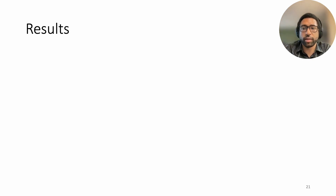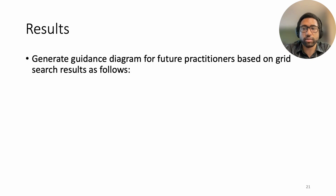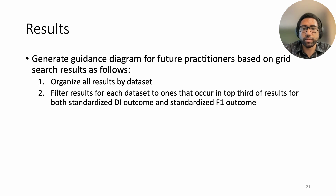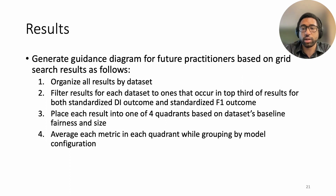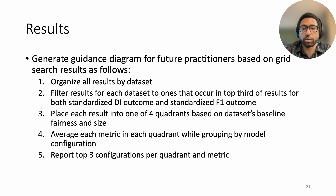In light of the trade-offs evidenced by our results, another research objective was to distill best practices for future practitioners based on their priorities. We do so by generating a guidance diagram programmatically from our results. First, we organize all results by dataset. Next, we filter results and corresponding configurations for each dataset to ones that occur in the top third of results for both standardized disparate impact outcome and standardized F1 outcome. Then, we place each result into one of four groups, or quadrants, based on the dataset's baseline fairness and size in terms of number of examples. Afterwards, we average each metric in each quadrant while grouping by model configuration, and lastly we report the top three model configurations per quadrant and metric in our diagram.